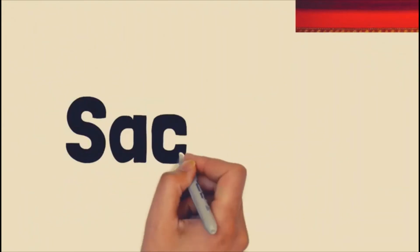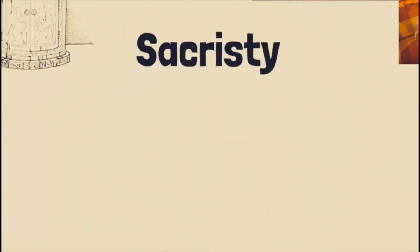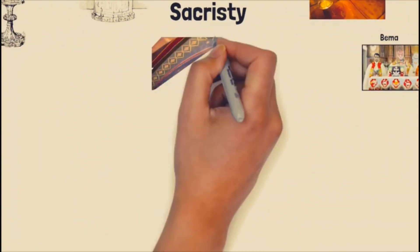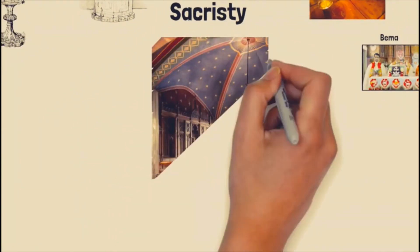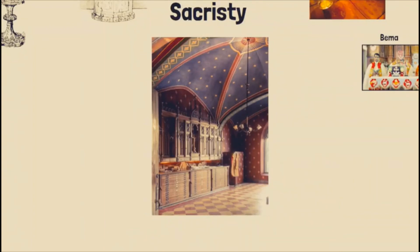The Sacristi is where the priests and deacons put on their sacred vestments and prepare for the Holy Kurbana. This is also the place where the sacred vessels, lectionaries, Taksa, and books of blessings and other prayers are kept.